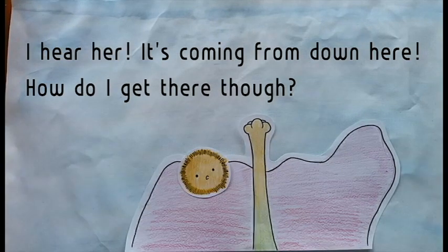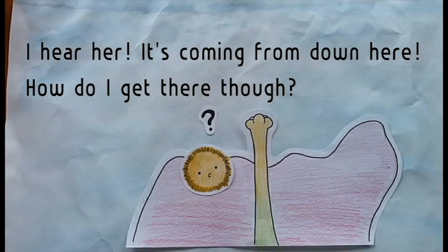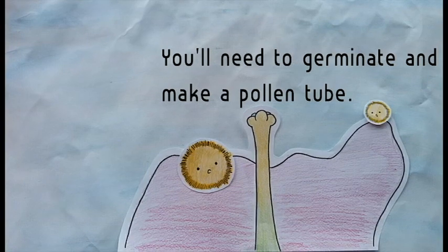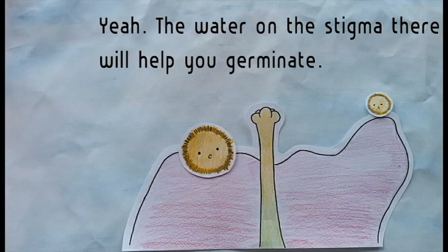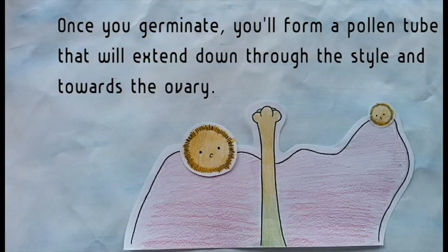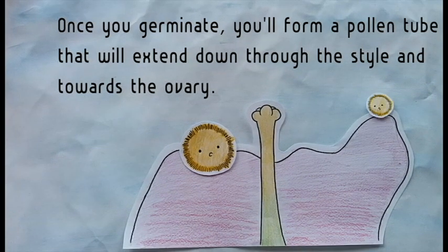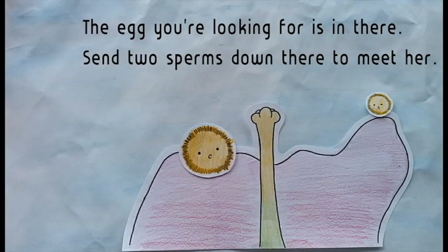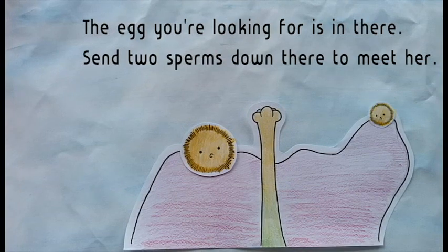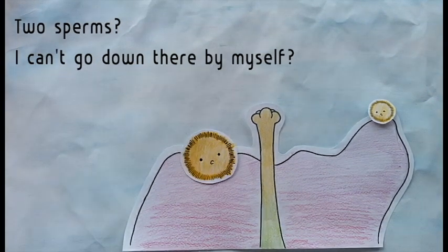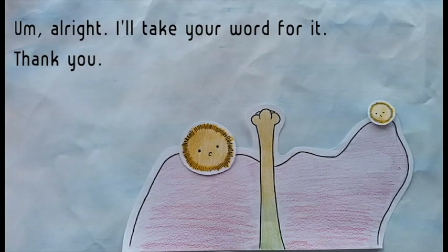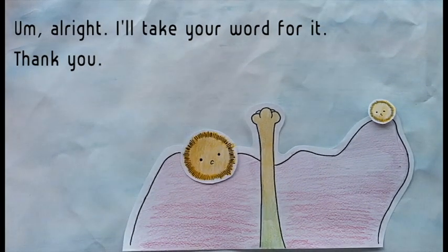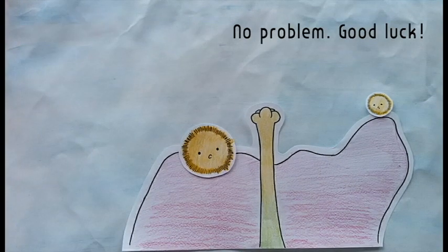Polana arrives. 'I hear her. It's coming from down here. How do I get there, though?' 'You'll need to germinate and make a pollen tube.' 'Germinate? Pollen tube?' 'Yeah, the water on the stigma there will help you germinate. Once you germinate, you'll form a pollen tube that will extend down through the style and towards the ovary. The egg you're looking for is in there. Send two sperms down there to meet her.' 'Two sperms? I can't go down there myself.' 'Of course not, silly. You have to become sperms to do that.' 'All right. I'll take your word for it. Thank you.' 'No problem. Good luck.'